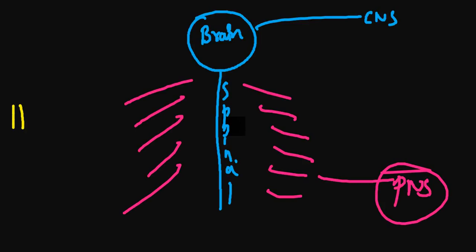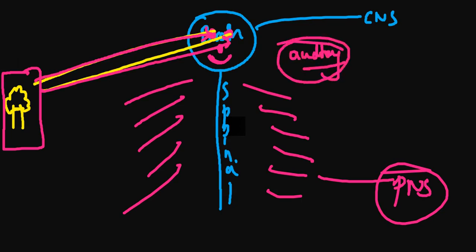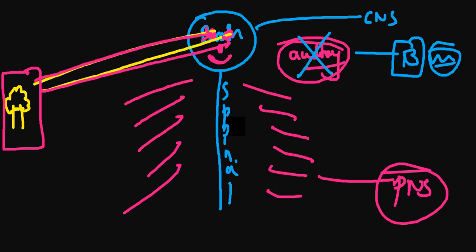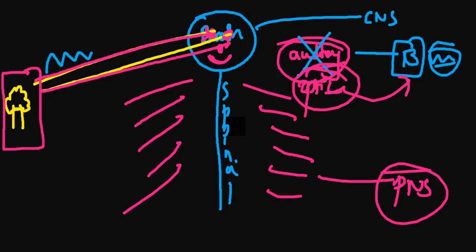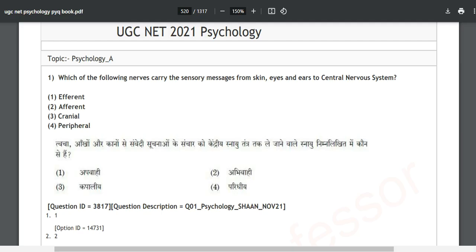Whenever a message is coming from a stimulus — let's say this is a tree and you are watching it with your eyes — the message goes into your eyes, then travels via the optic nerve to the visual cortex, the V1 area of your brain. So the message goes from outside, through your sensory organs, to your brain.